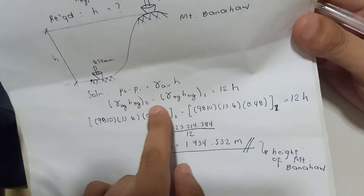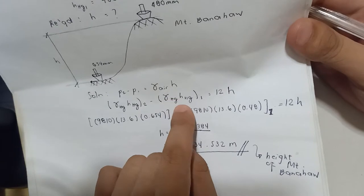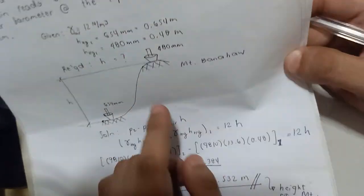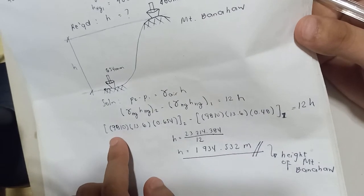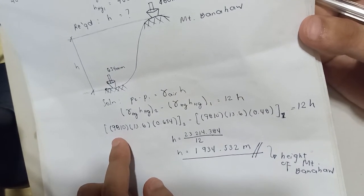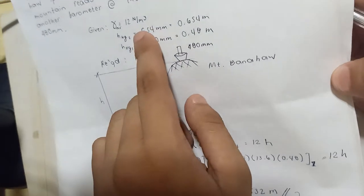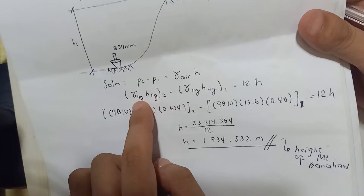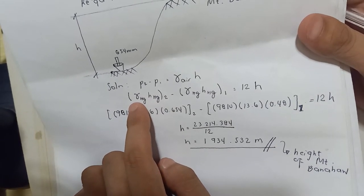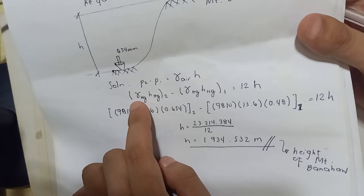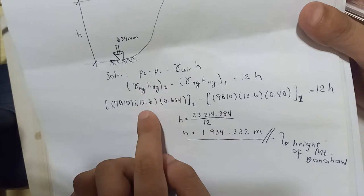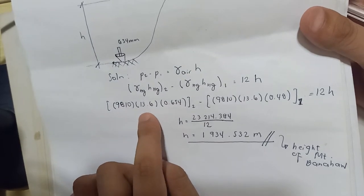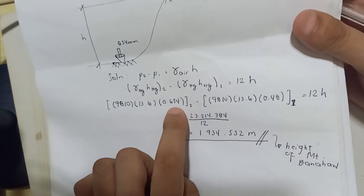The base has the higher pressure, so that is P1. Unit weight of mercury equals 9,810 times 13.6, and converting heights to meters: 0.654 meters at the base and 0.48 meters at the top. The equation becomes: 9810 times 13.6 times 0.654 minus 9810 times 13.6 times 0.48 equals 12 times H.